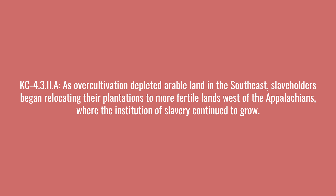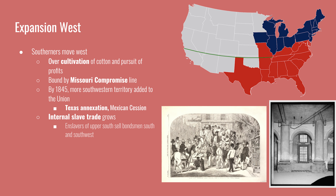The last key concept says that as over-cultivation depleted arable land in the Southeast, slaveholders began relocating their plantations to more fertile lands west of the Appalachians, where the institution of slavery continued to grow. The cotton they were planting depleted the soil of its nutrients and would yield smaller harvests each growing season. Those moving west with enslaved people were bound by the Missouri Compromise — the northern boundary of slavery was the southern border of the state of Missouri, extending all the way out west. By 1845, most southwestern territories were added to the Union through the annexation of Texas and the Mexican Cession.